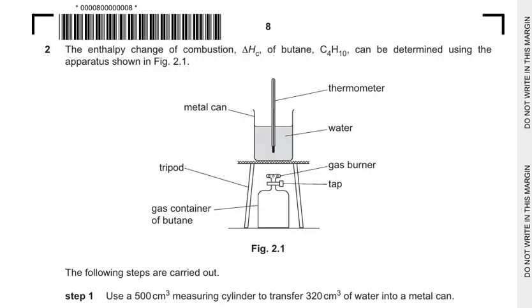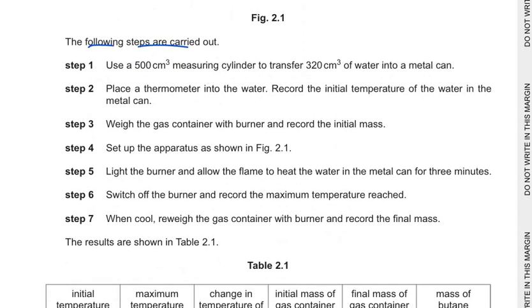Here is question 2 and it says that the enthalpy change of the combustion, that is delta Hc of butane, can be determined using the apparatus given here in figure 2.1, and the following steps are carried out. Now let's see what are the following steps here.